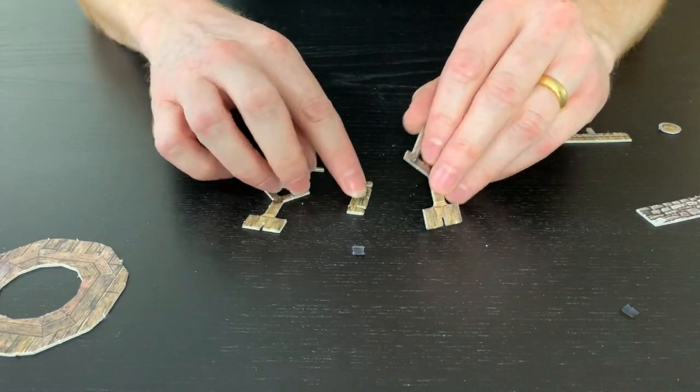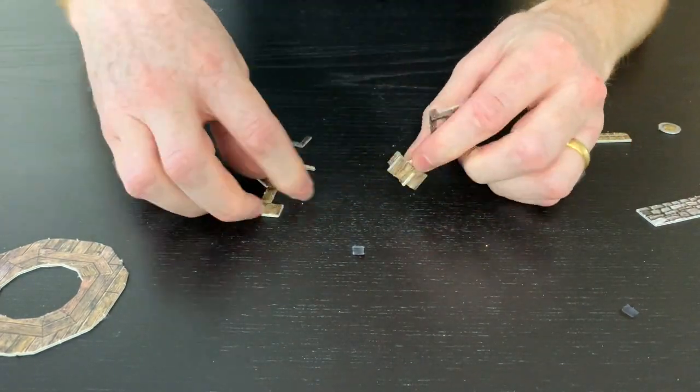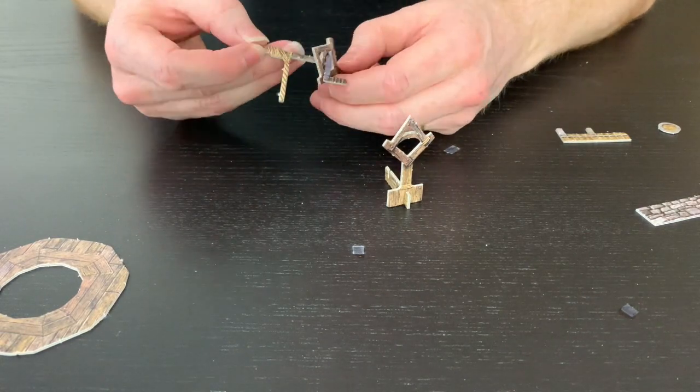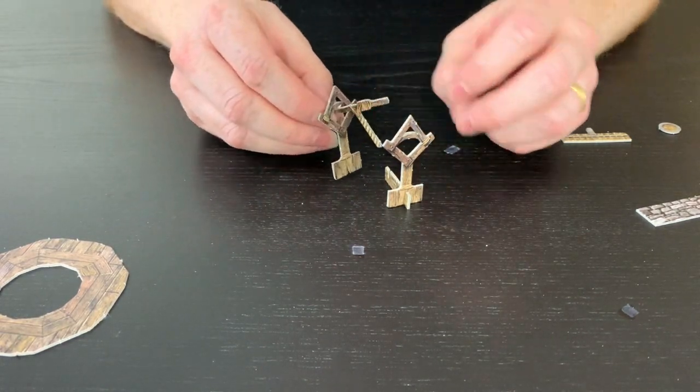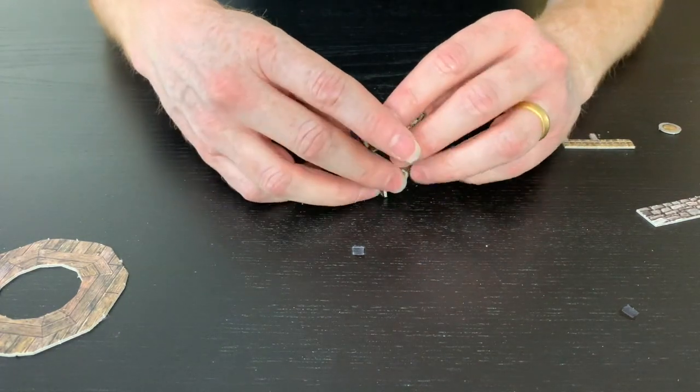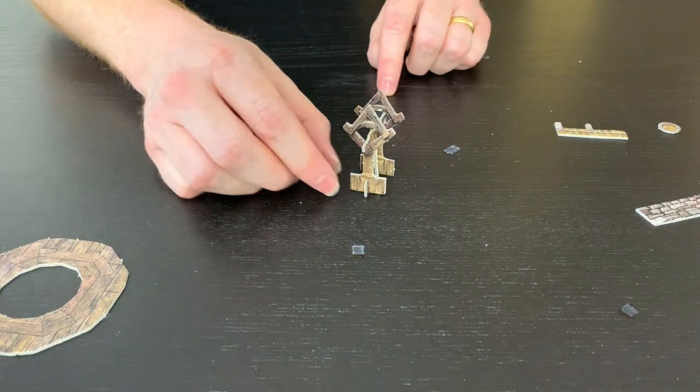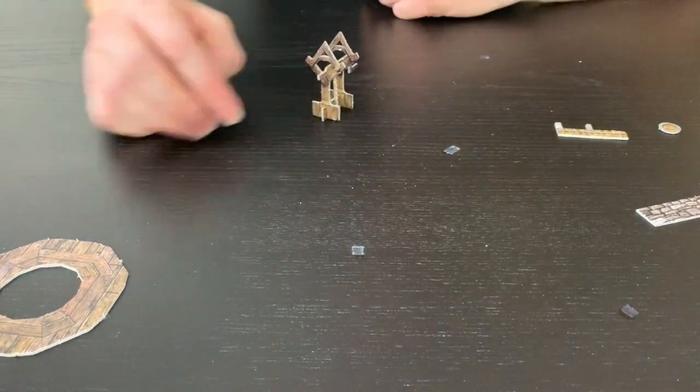We've got two of these which slot in either side of here, and we just need to poke this through here, the handle side, and then pop that in there and then slot this one on the top. And there you have the bit that goes inside.